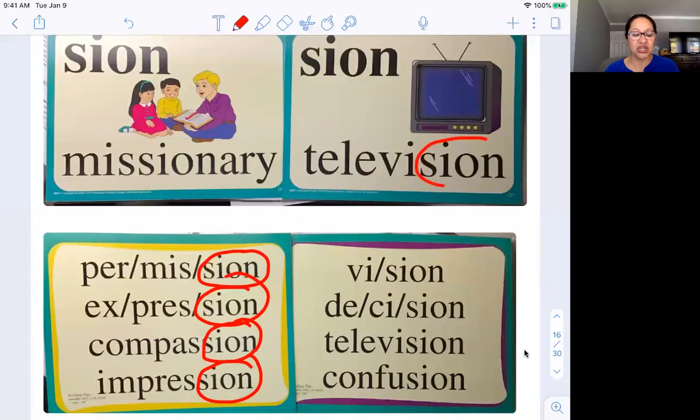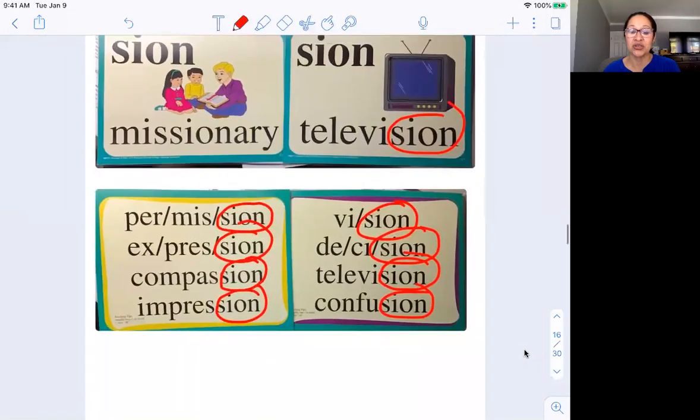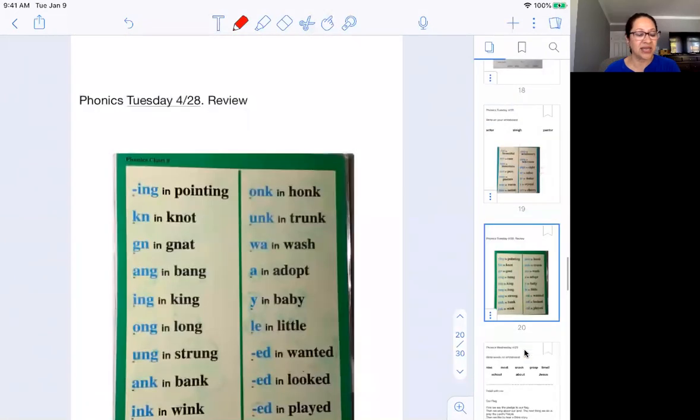Now let's go on to the next chart. You have television. Vision, S-I-O-N. Decision, S-I-O-N. Television, S-I-O-N. And the last one is confusion, S-I-O-N. So all of these words have special sounds in them.